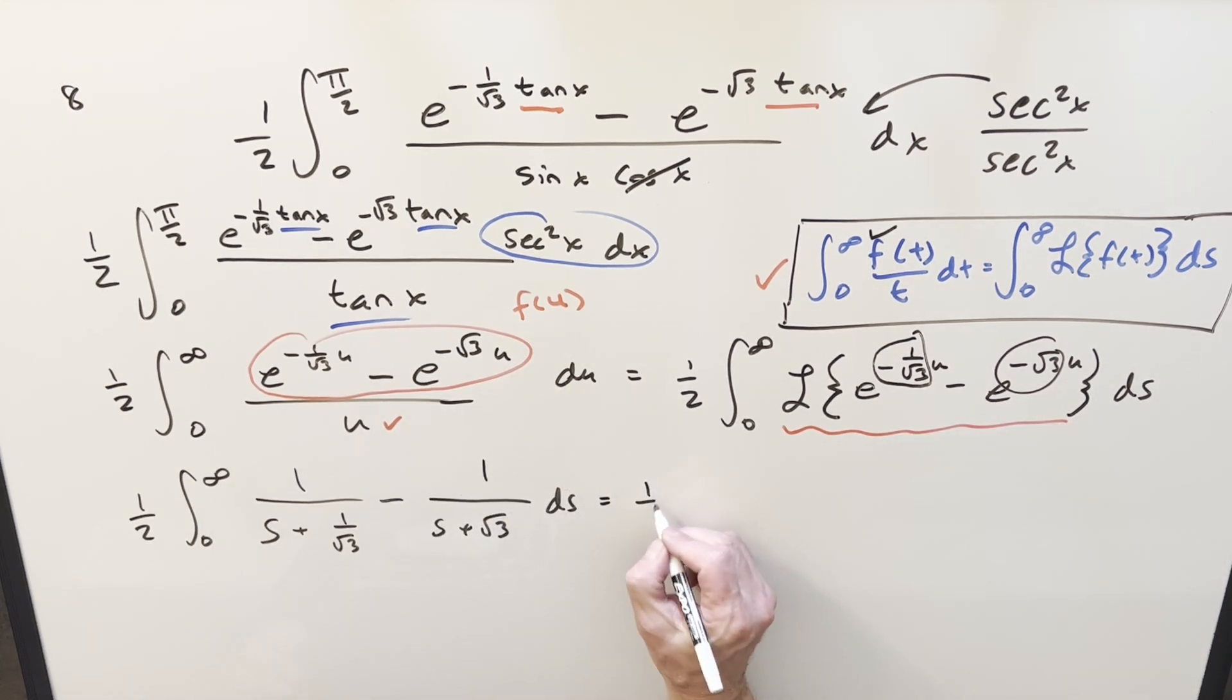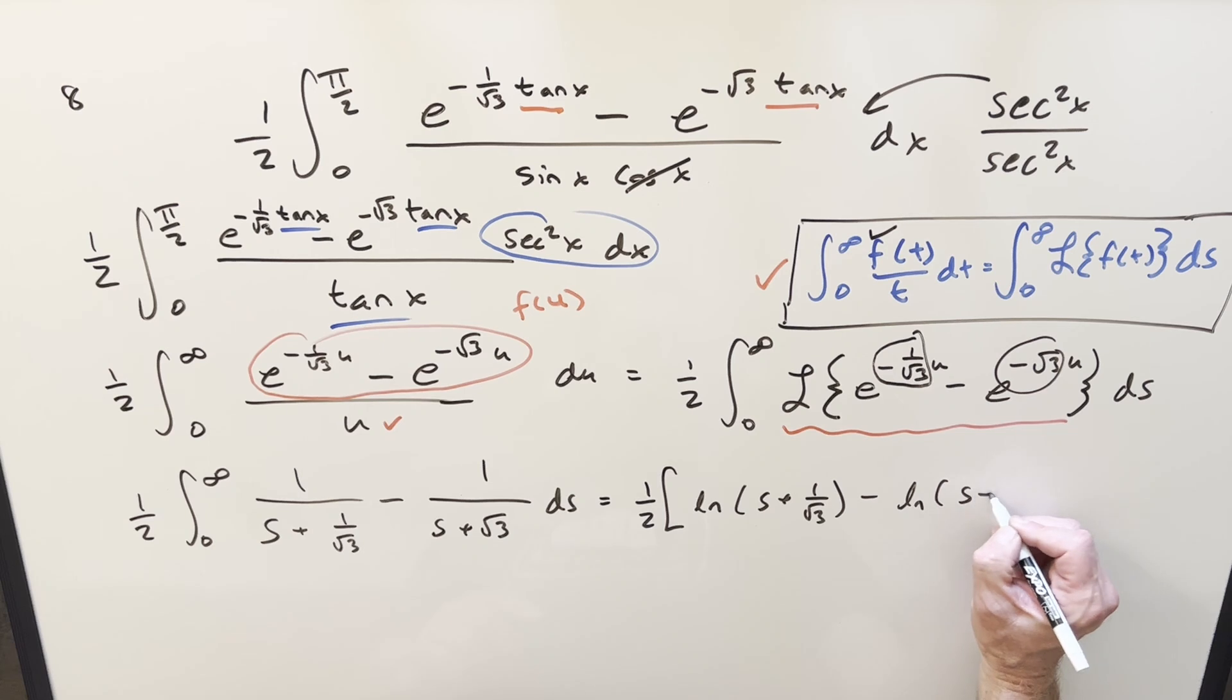Let's bring the 1 half in front. This first one, this is going to be natural log. I'll drop absolute value because we want s to be greater than 0 on it. So we'll have s plus 1 square root of 3. Second part minus natural log s plus square root of 3. And we need to evaluate from 0 to infinity. But before I evaluate, let's bring this all together with log properties. We're subtracting so we can make this a fraction like this. And also with the 1 half, I can bring it into the exponent and write it all as square root.